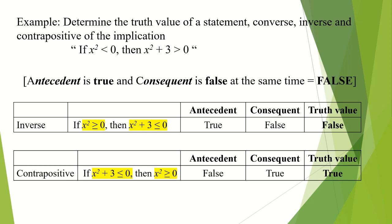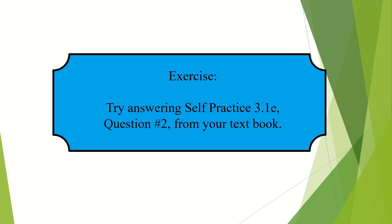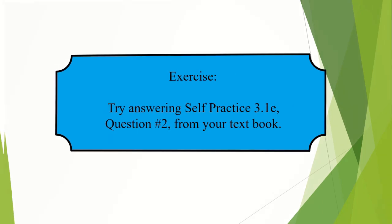The last one will be contrapositive. Check the antecedent, which is false, and the consequent is true, so the truth value will be true. Try answering self-practice 3.1e question number two from your textbook to test your understanding on how to determine the truth value for an implication, converse, inverse, and contrapositive.